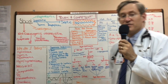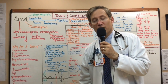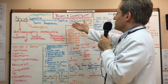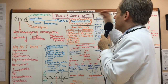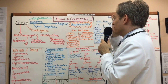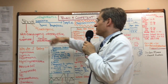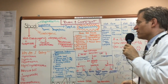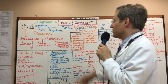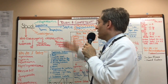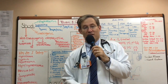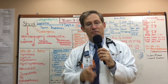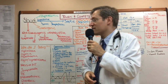You will primarily be caring for patients who have septic shock while you're here in the surgical intensive care unit. Surgical septic shock is a subcategory of distributive shock. Other examples of distributive shock include spinal shock and anaphylactic shock. Hypovolemic shock is commonly seen in patients who are bleeding — hemorrhagic shock — but also in patients who have diabetic ketoacidosis.